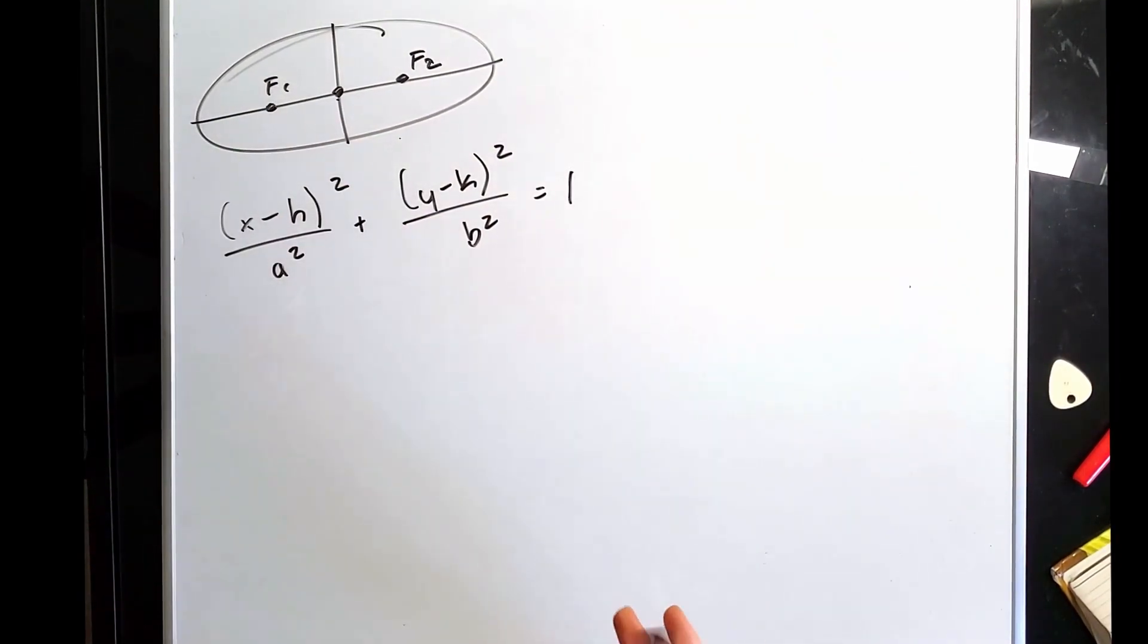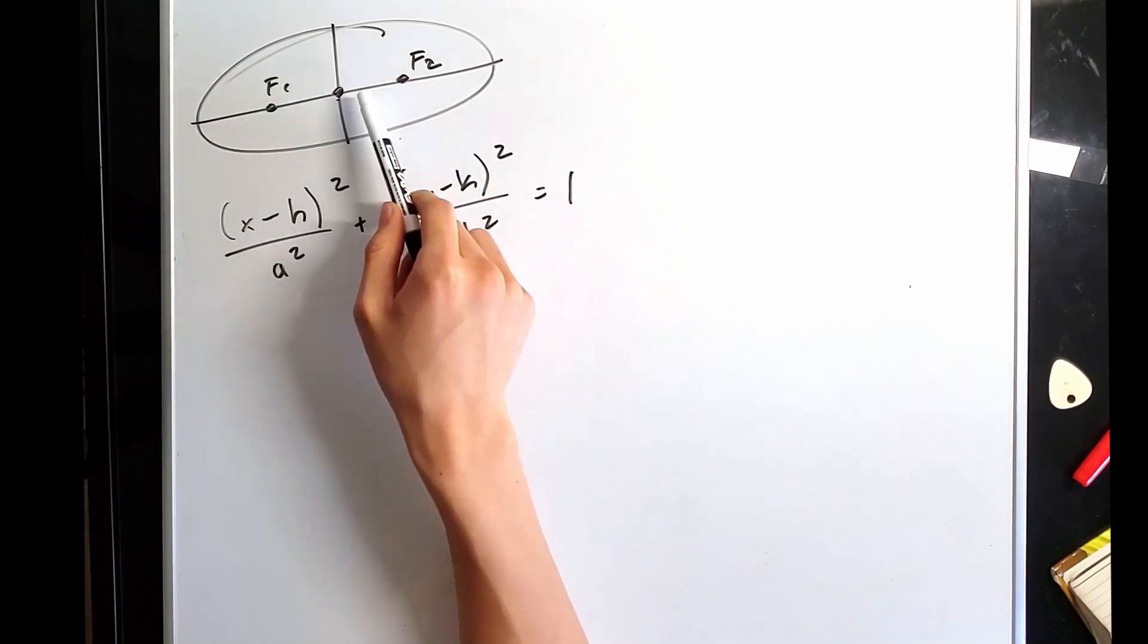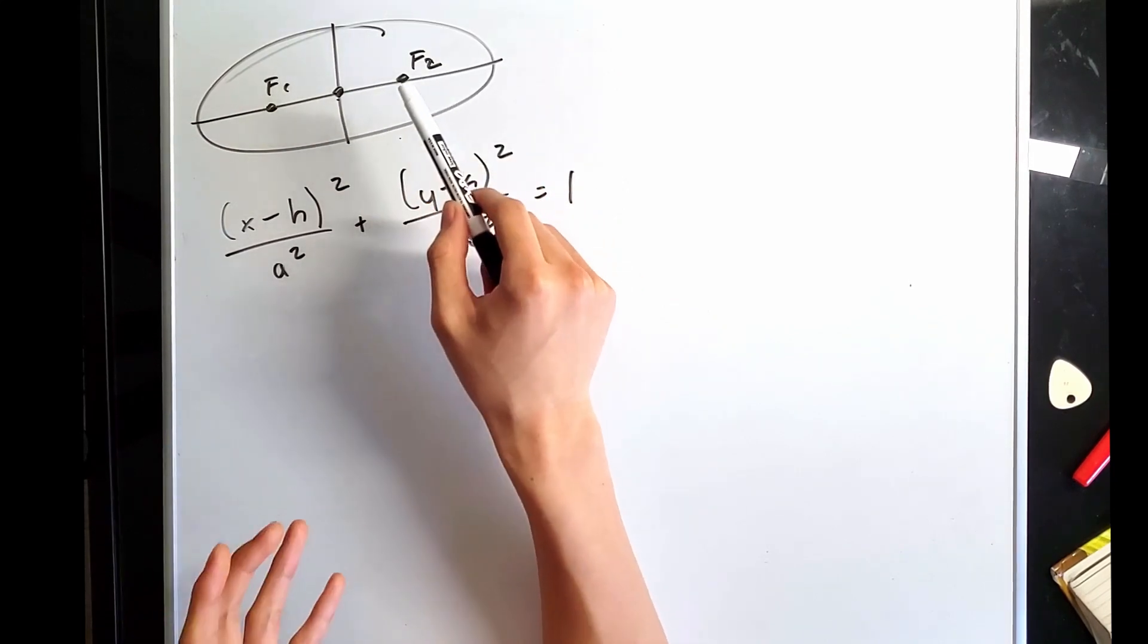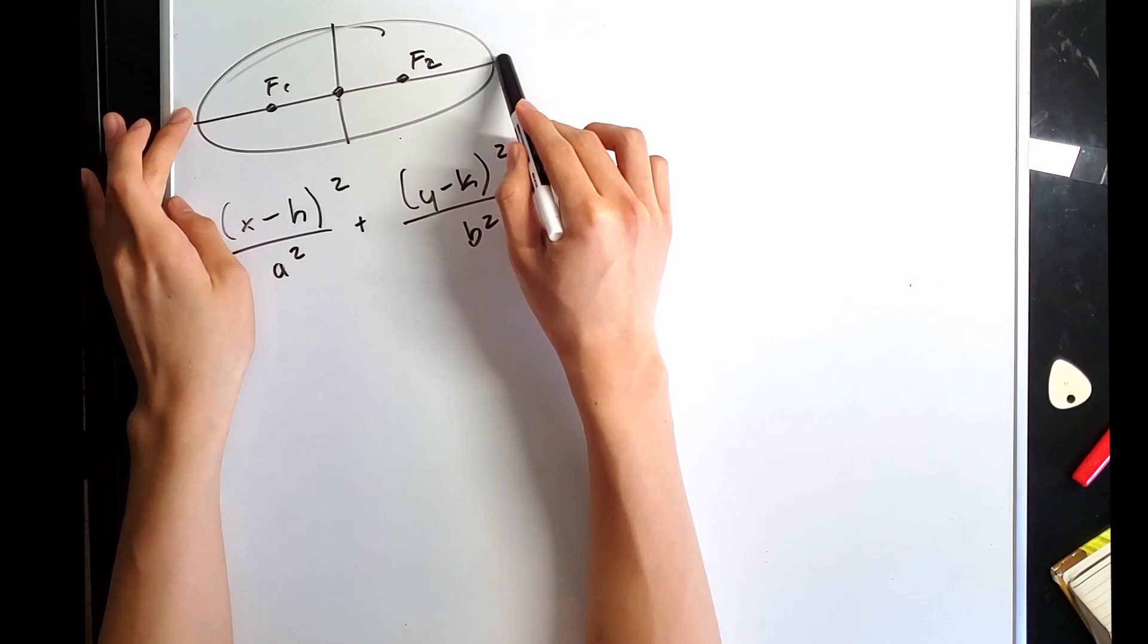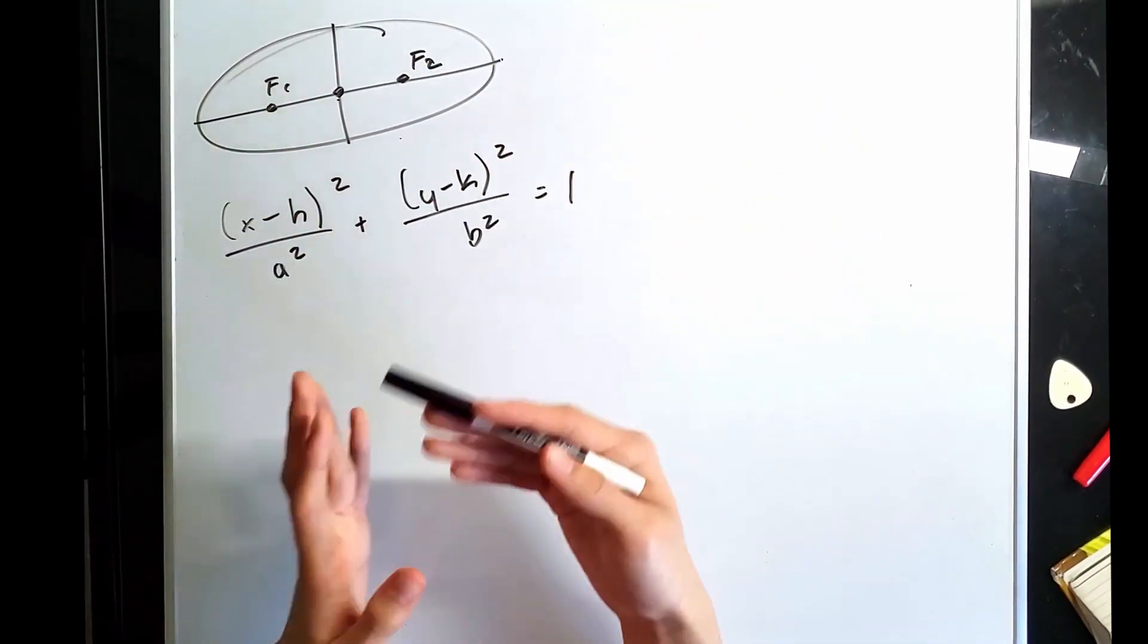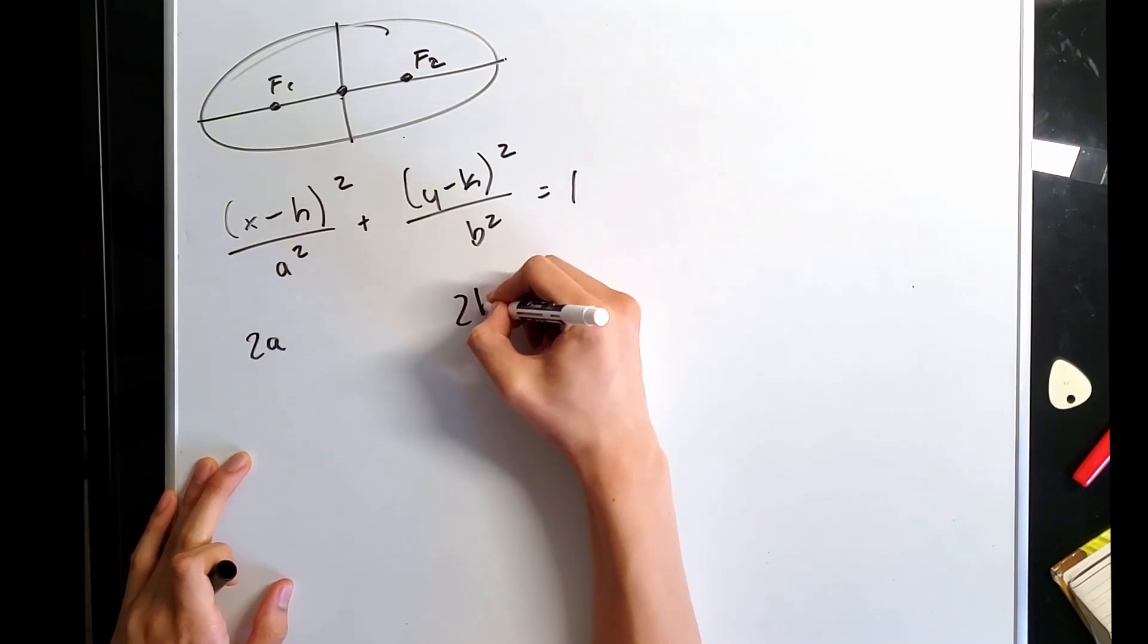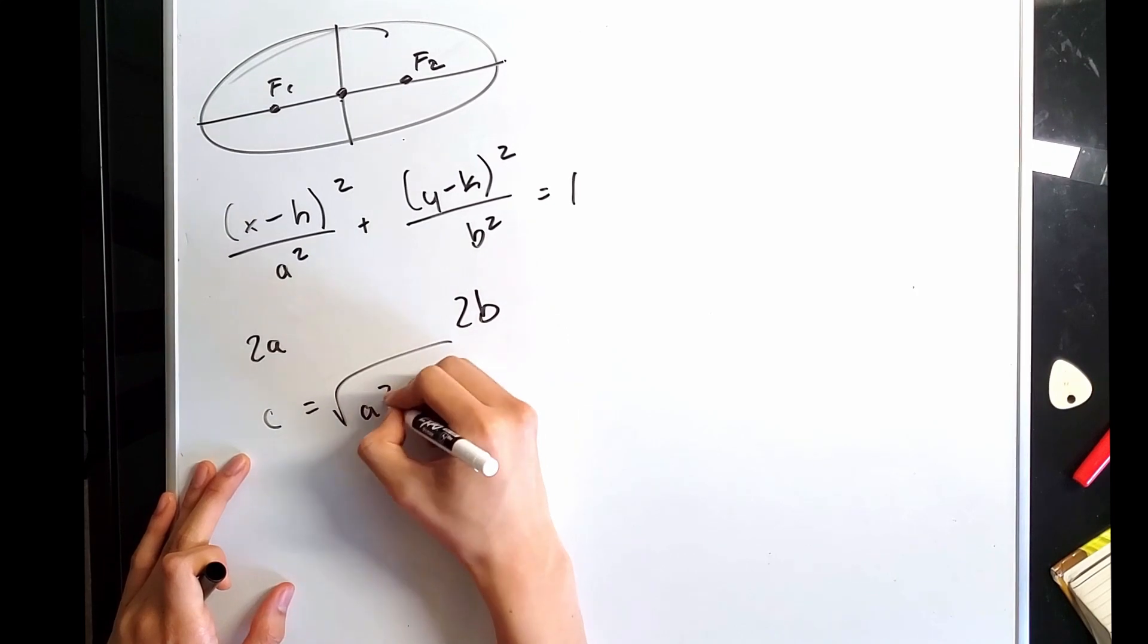Ellipses are basically stretched out circles. Circles are ellipses. Here's the general form of an ellipse with center h, k. Ellipses can be defined by the two foci. The distance from any point to the two foci summed to a constant. The major axis of an ellipse is the long axis here. The minor axis is the short axis. It can be vertical or horizontal. The length of the major axis is 2a, and the length of the minor axis is 2b. The distance from the center to the foci, c, is equal to the square root of a squared minus b squared.